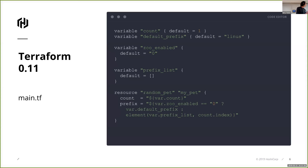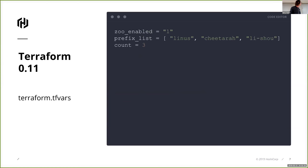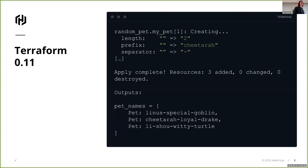Same example, but this time I've decided I need more dynamism in the configuration. I want to add an optional prefix to my pet's name. So I've added a variable which allows me to turn the prefix on or off, and I've decided that the prefix is going to come from a list based on the count index. It's already starting to get a bit overwhelming, but that's going to work just fine. I can set my tfvars, switch on my prefix enabler, run terraform apply, and it'll work.